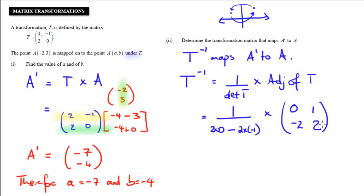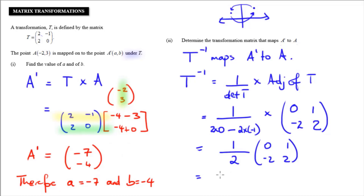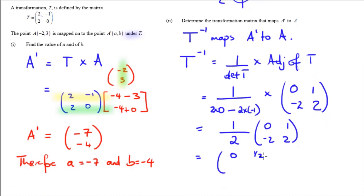The adjoint is found by swapping the terms on the leading diagonal and changing the signs of the terms on the off-diagonal, giving us 0, 1, minus 2, 2. Now, 2 times 0 is 0, and minus 2 times minus 1 is positive 2, so the determinant is 2. That gives us one-half times the matrix 0, 1, minus 2, 2. Multiplying each entry by one-half: 0, one-half, negative 1, and 1. Therefore, T inverse is the matrix 0, one-half, negative 1, 1 — and this is the transformation matrix that maps A prime onto A.